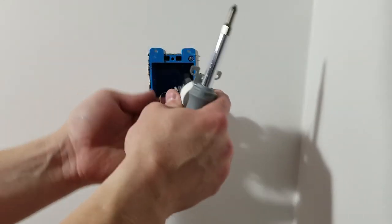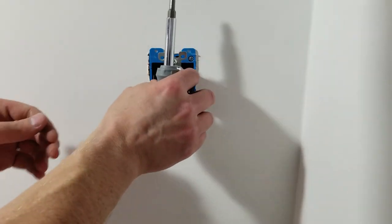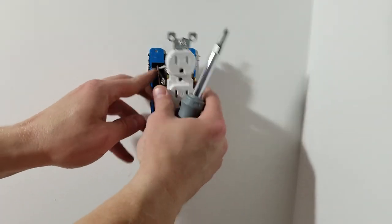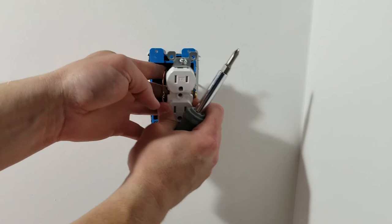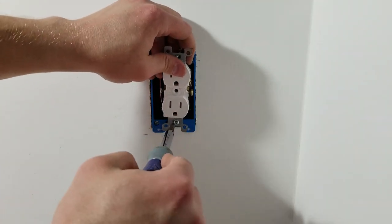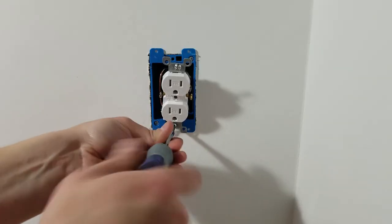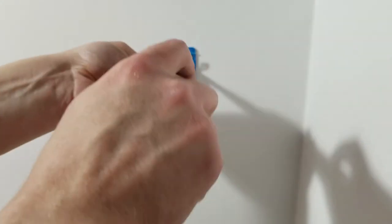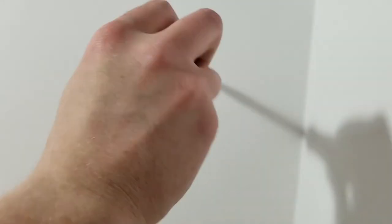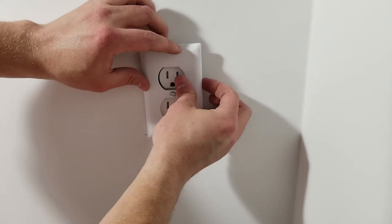Now that the outlet is wired up I'm going to fold the wires back and I'm going to screw the outlet into the box. Now I'm putting the faceplate on and I'm done.